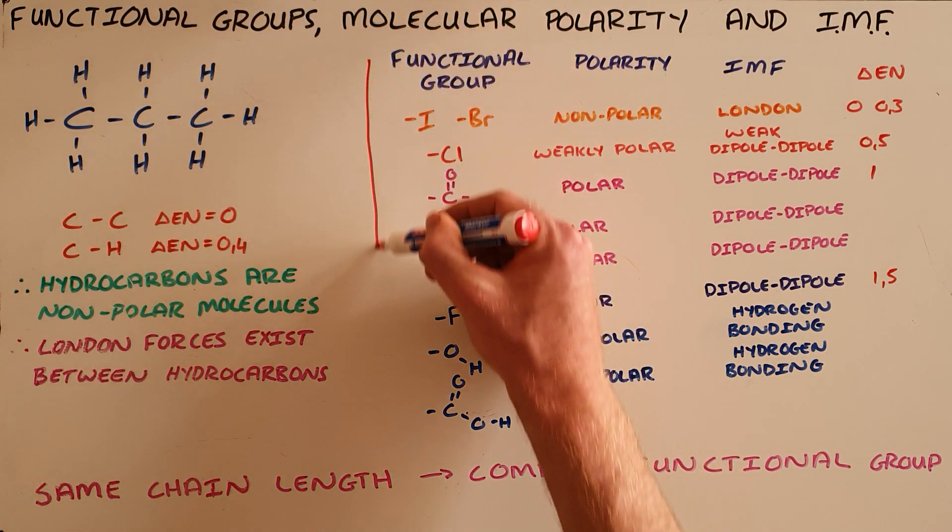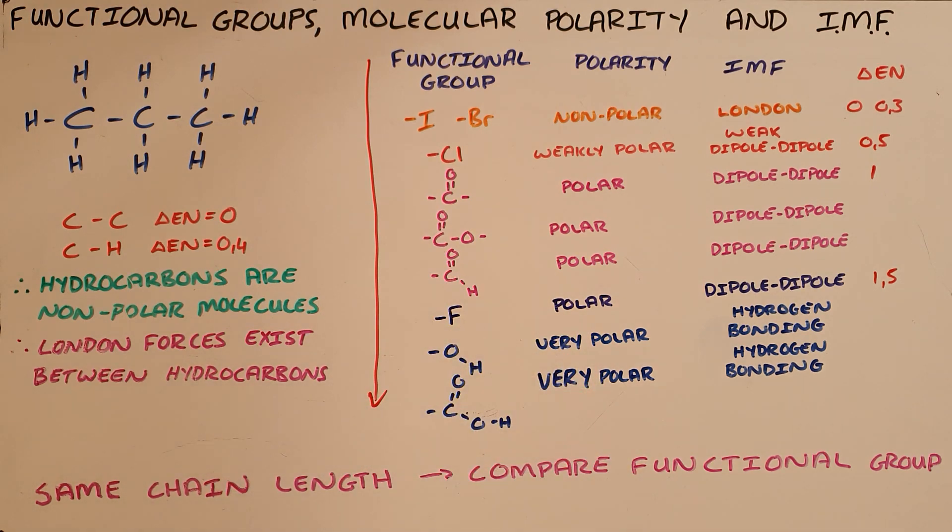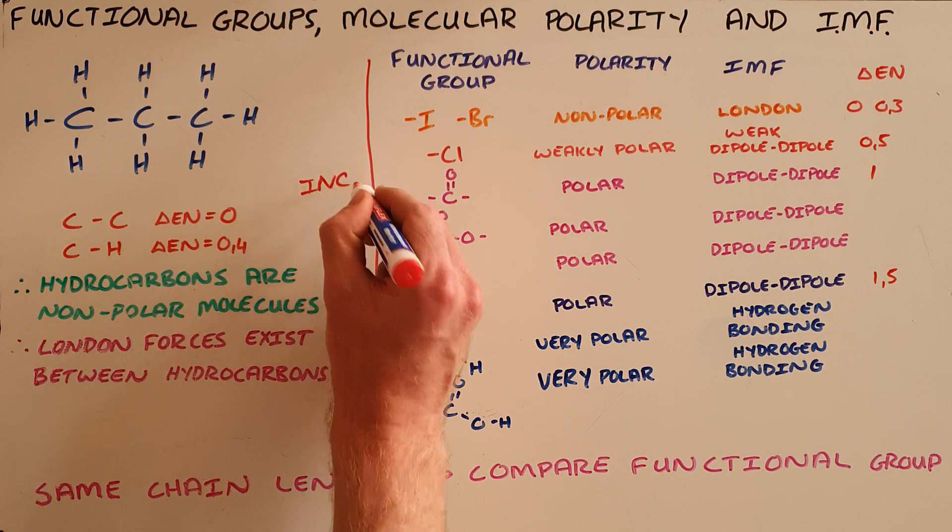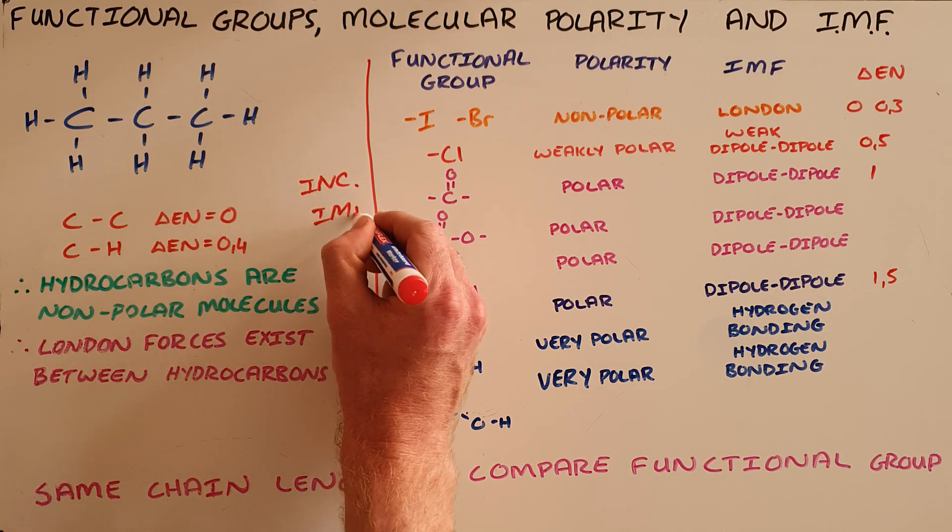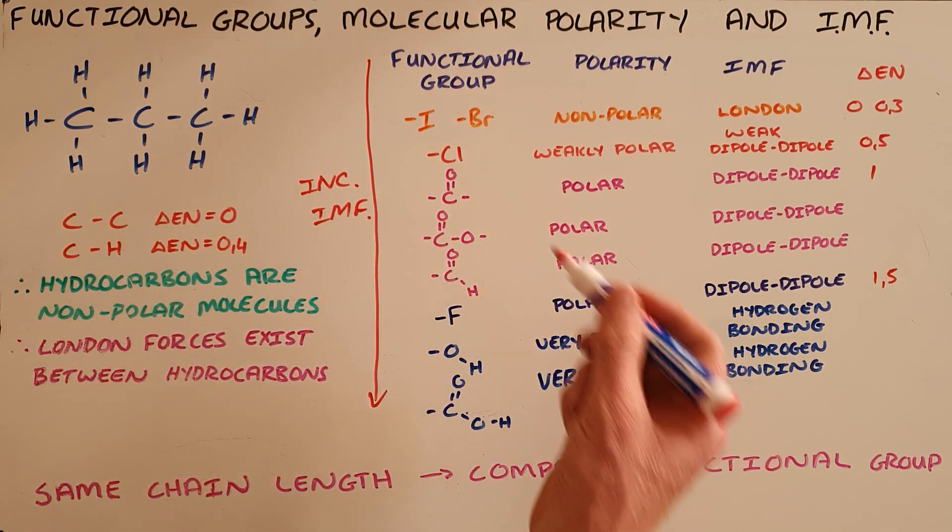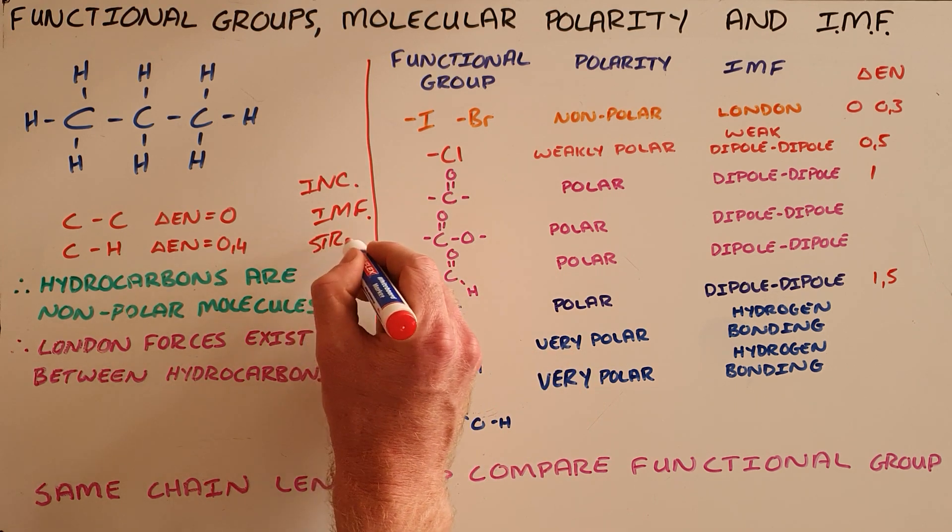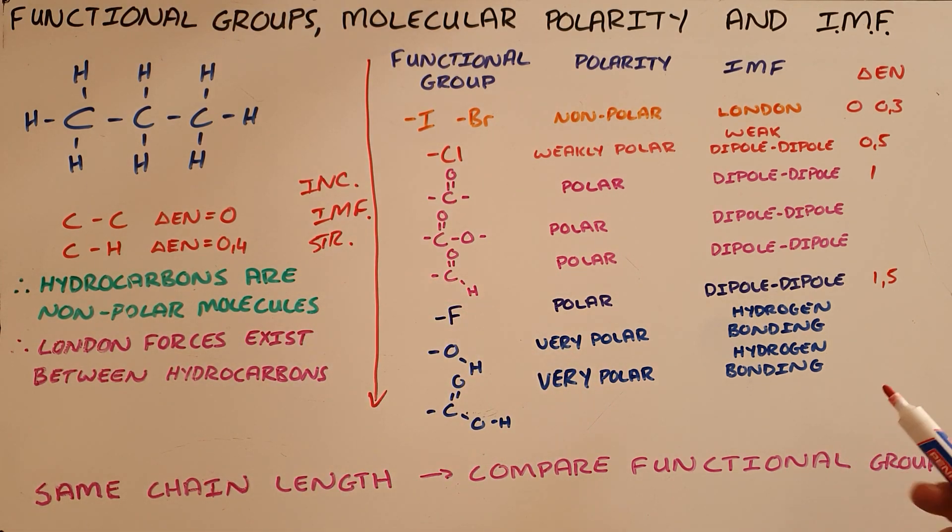So as we can see in this table, we have arranged these functional groups in order of increasing intermolecular force strength. And so we can say that substances with functional groups lower down on this table have stronger intermolecular forces, and as a result, their physical properties would be affected.